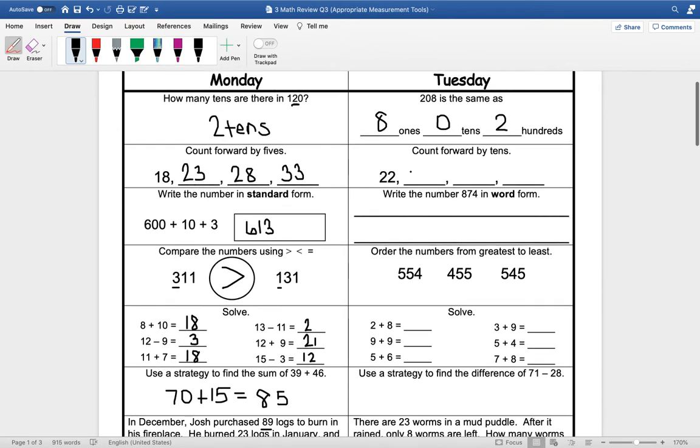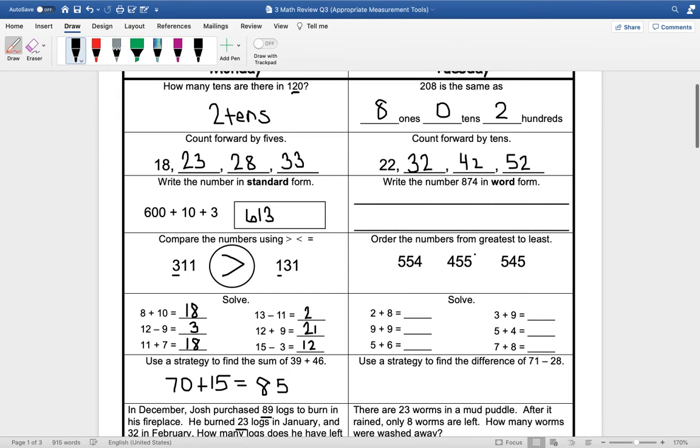We are going to count forward by tens starting with 22. Our next number would be 32, and then 10 more is 42, and 52. Remember we leave our ones the same when we're counting forward by tens. Write the number 874 in word form.